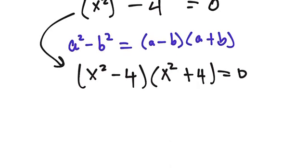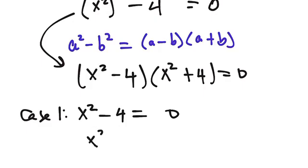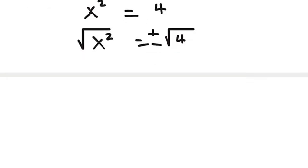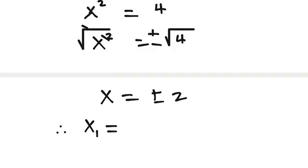This is a zero-product equation, so either factor can be zero. Case 1: x squared minus 4 equals 0, so x squared equals 4. Taking the square root of both sides gives plus or minus, so x equals plus or minus 2. Therefore x₁ equals 2 and x₂ equals negative 2.